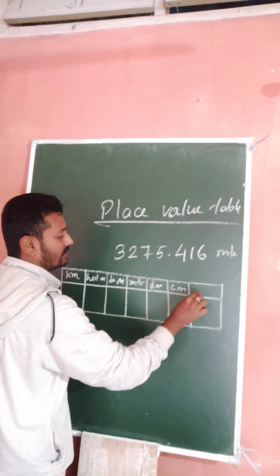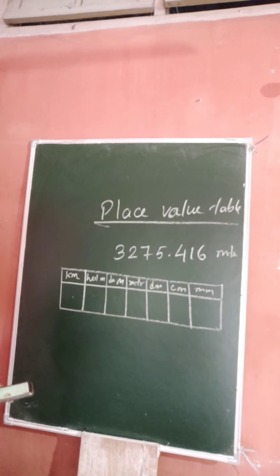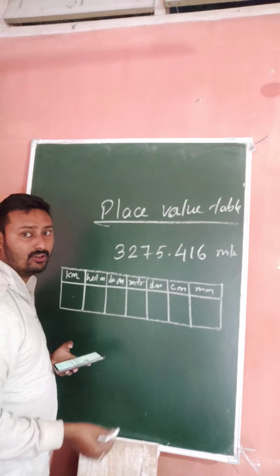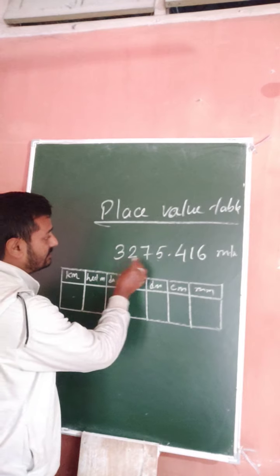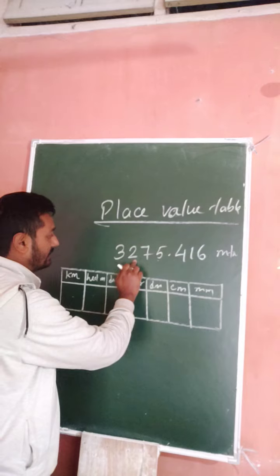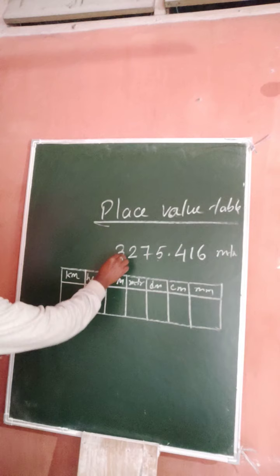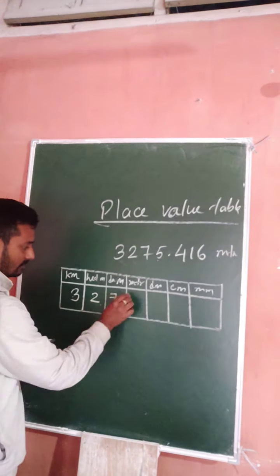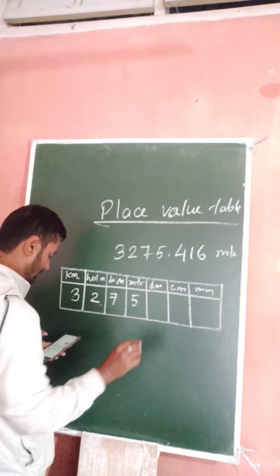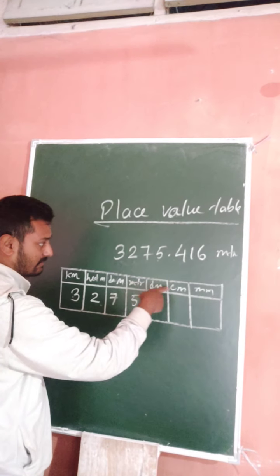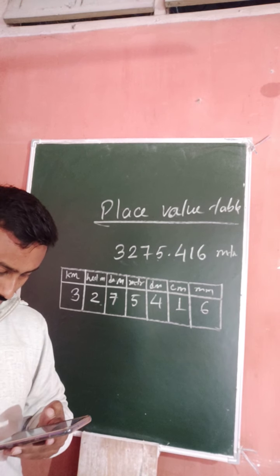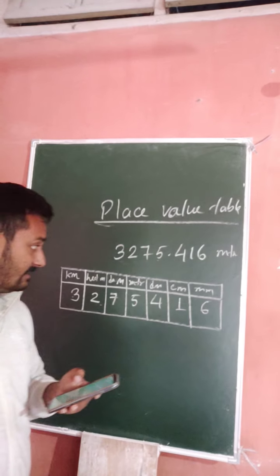The number is 3275.416 meters. You write 3 in the kilometer column, 2 in the hectometer column, 7 in the decameter column, and 5 in the meter column. There is no need to write the decimal point since the columns after the meter — decimeter, centimeter, millimeter — take care of that. So 4 goes in decimeter, 1 in centimeter, and 6 in millimeter. This is very important. In the next exercise, 19.1, you have to complete the given things in place value tables.